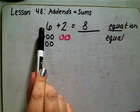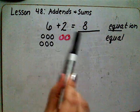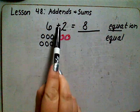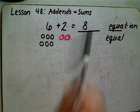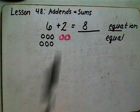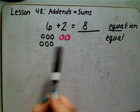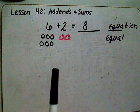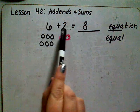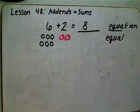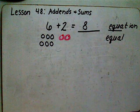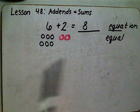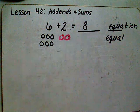Going back to our equation: six plus two equals eight. The addition sign tells us we have to join together two numbers to find the total or the sum. In six plus two, we are joining together the six and the two, and we know the sum is eight.